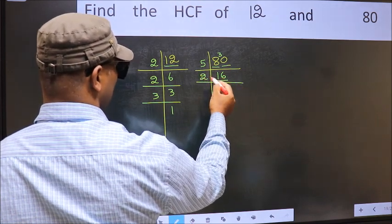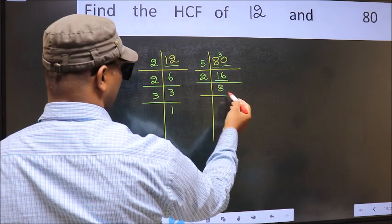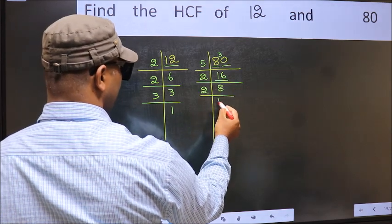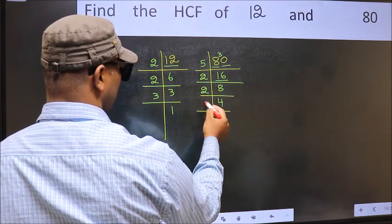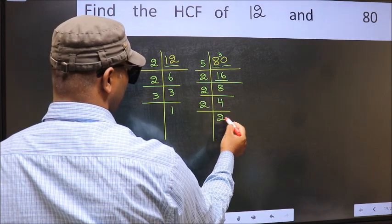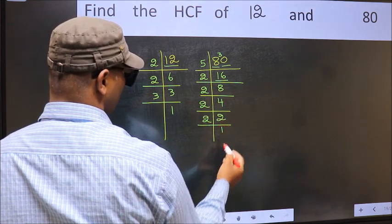Now 16 is 2 times 8, which is 16. 8 is 2 times 4, which is 8. 4 is 2 times 2, which is 4. 2 is a prime number, so 2 times 1 is 2.